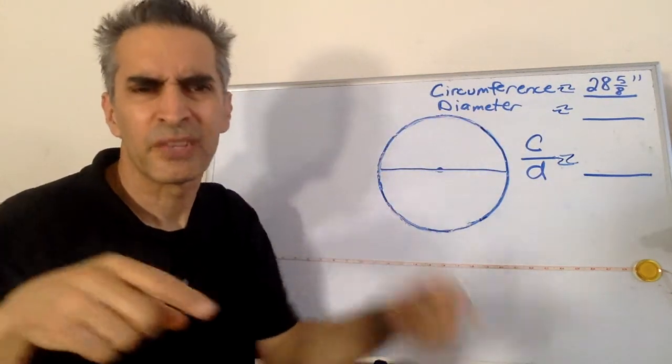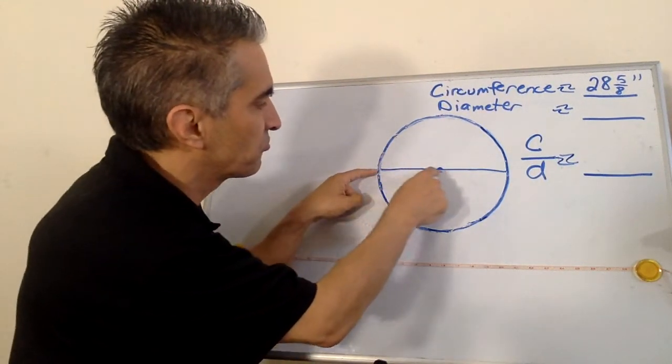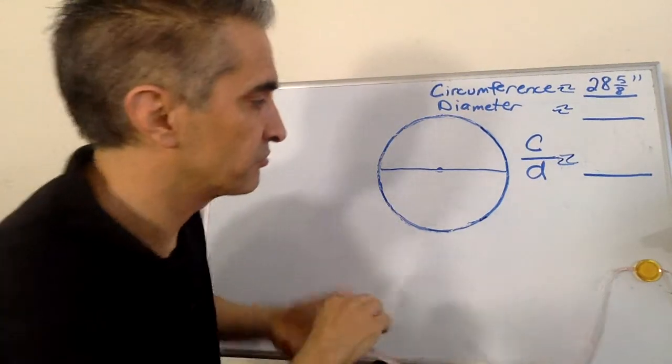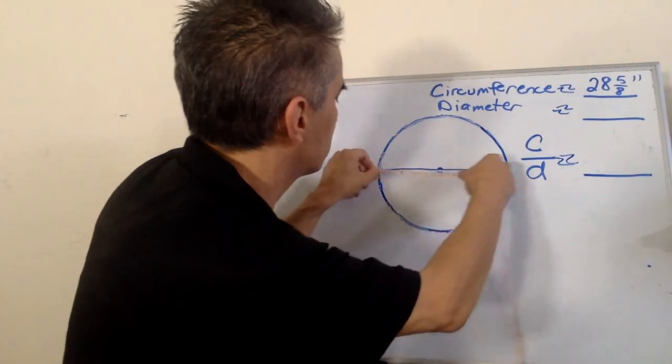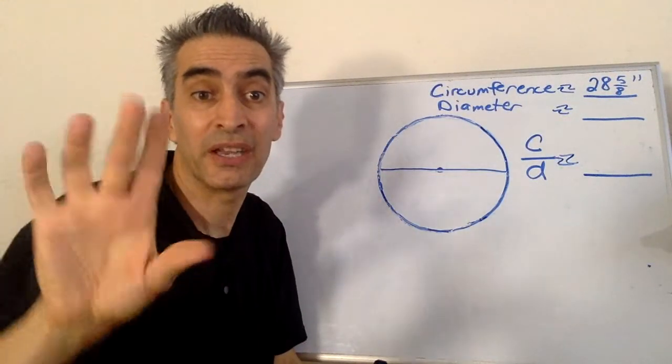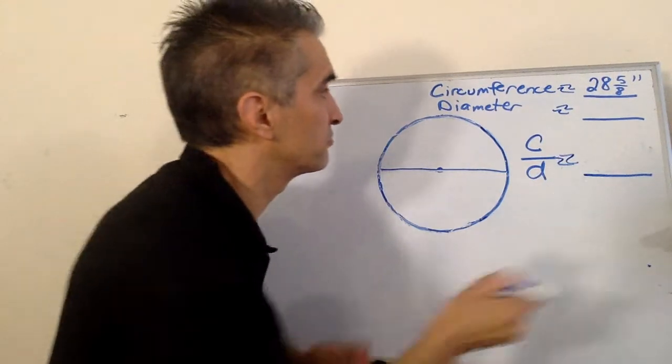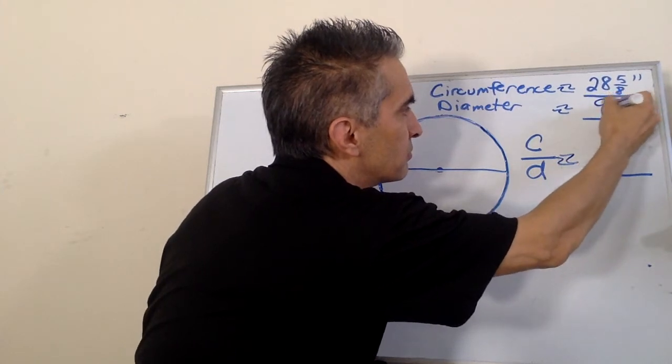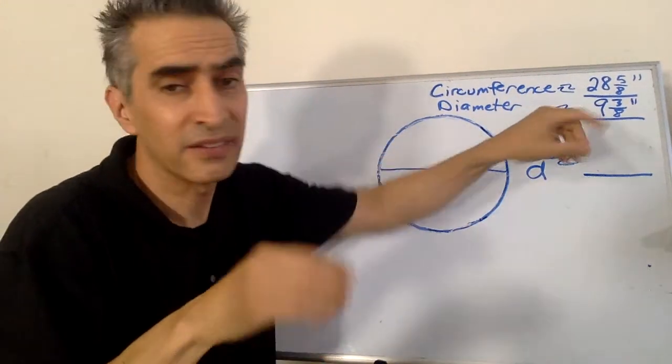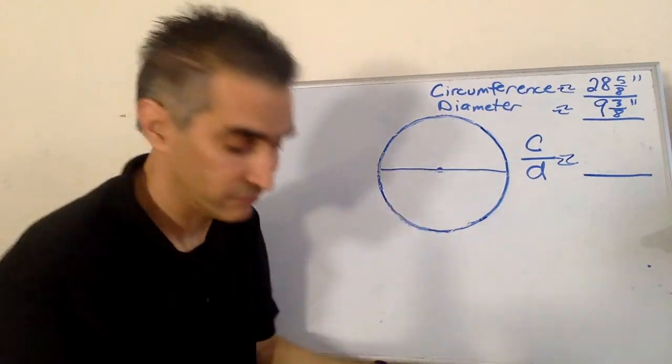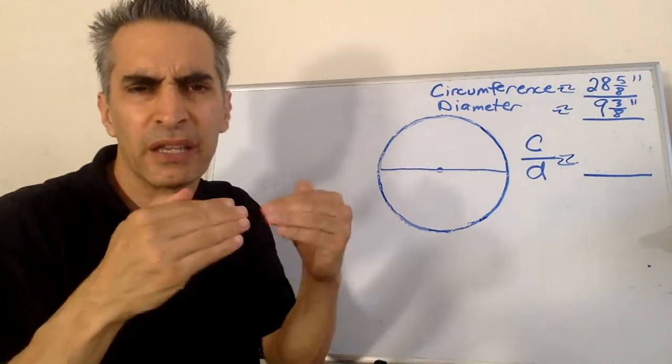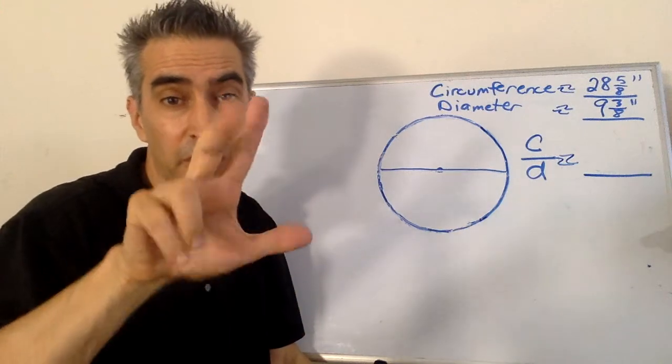Next we're going to measure the diameter. Where is the diameter? Right there, this line right here. What does this measure? Let's see. Around 9 and 3 eighths inches. Next, this number we divide by this number here, and you can use a calculator. That equals around 3.14.